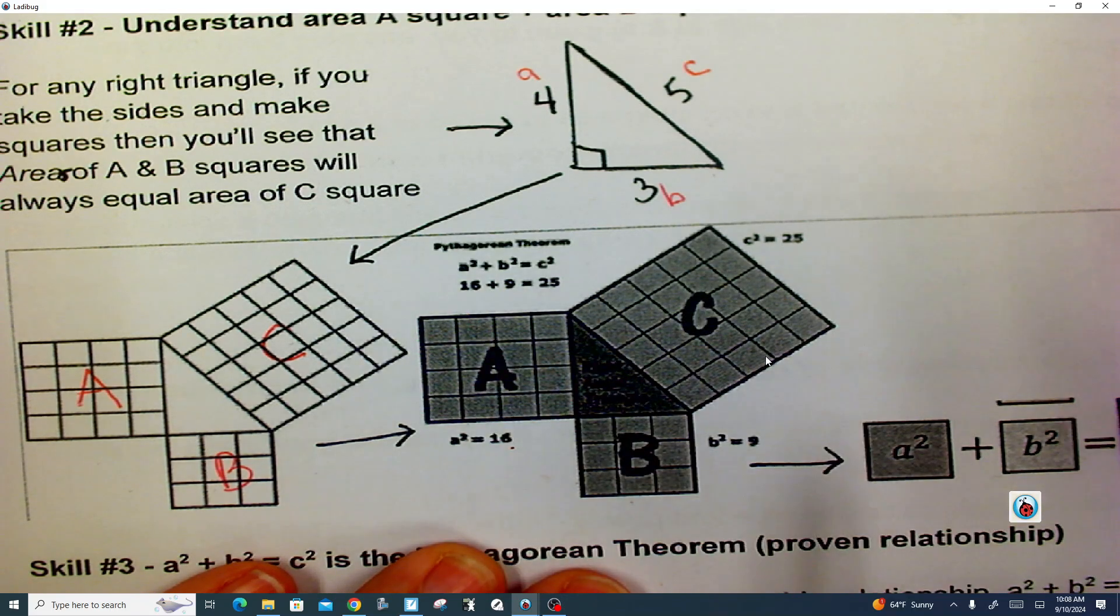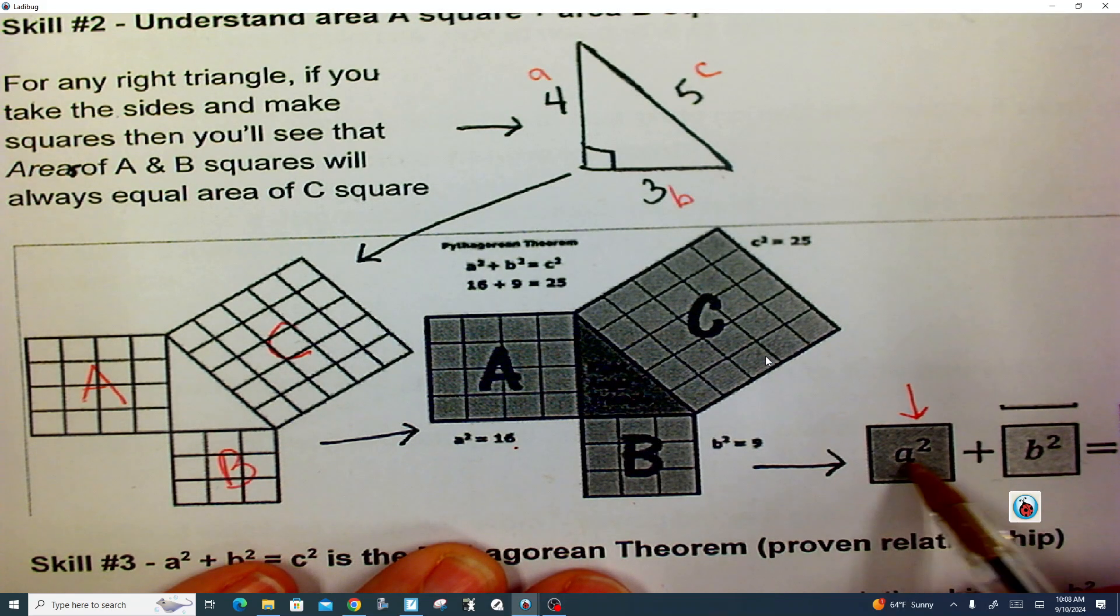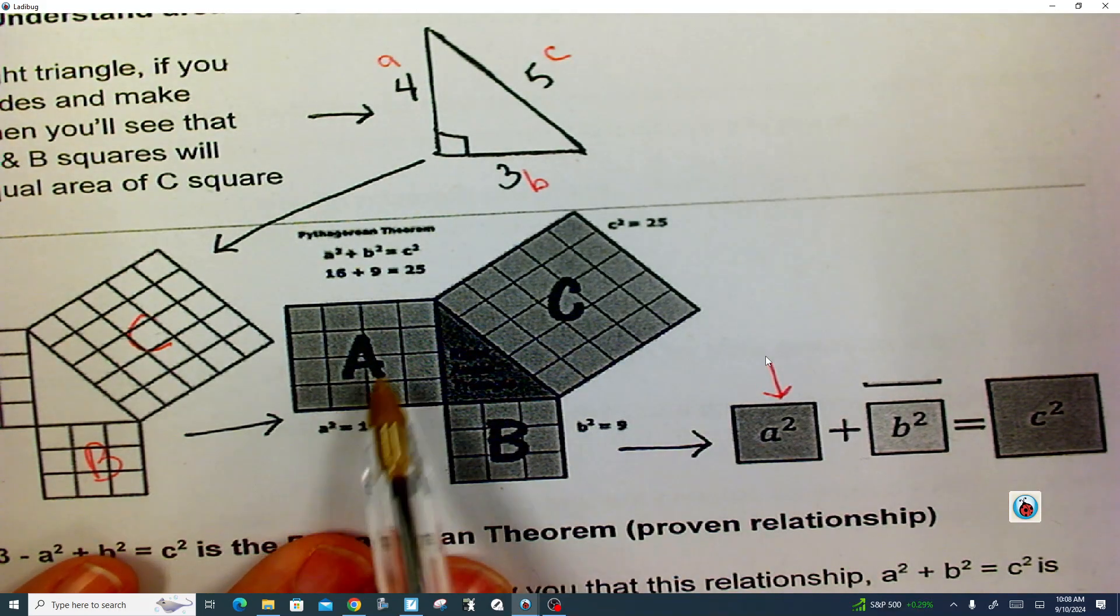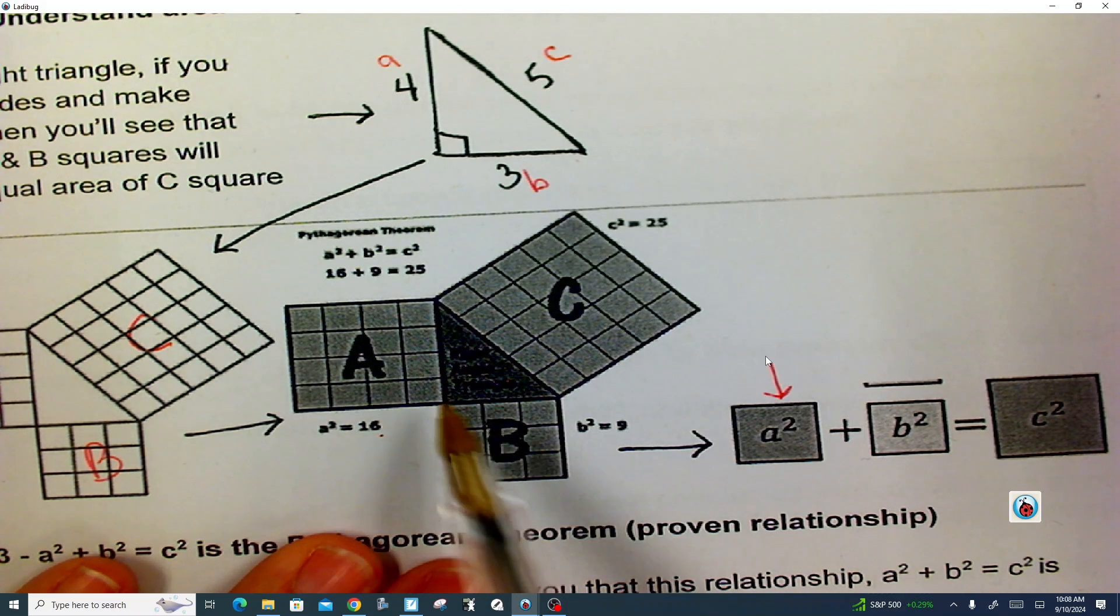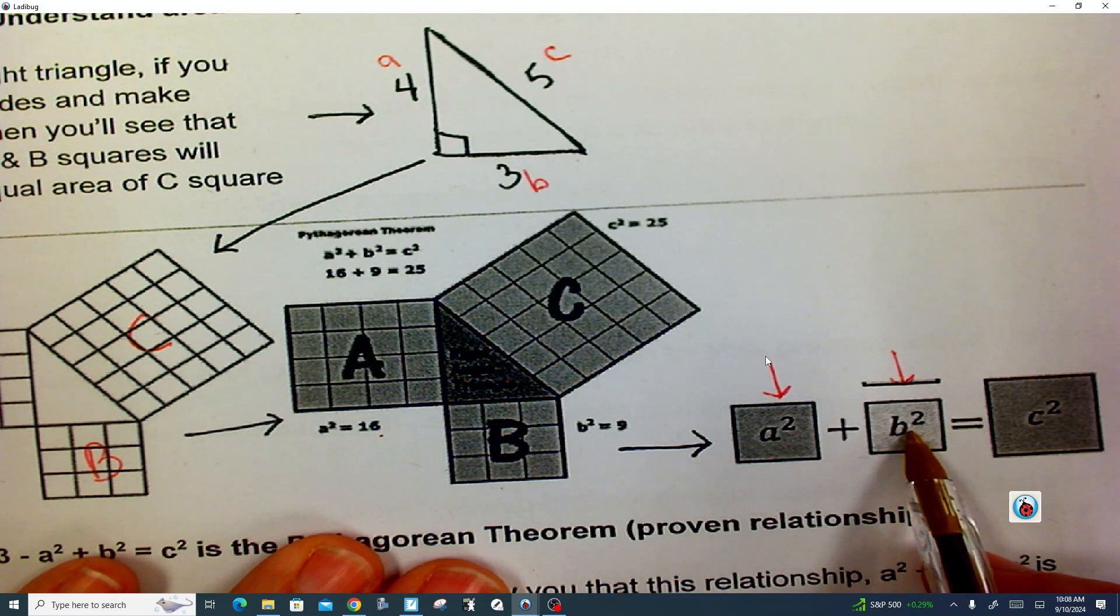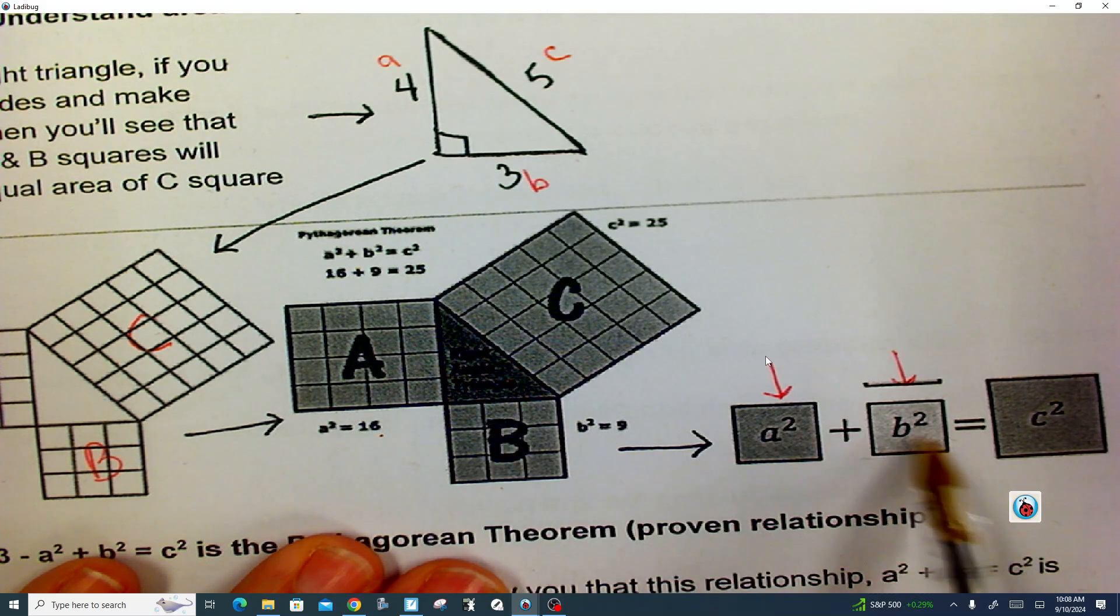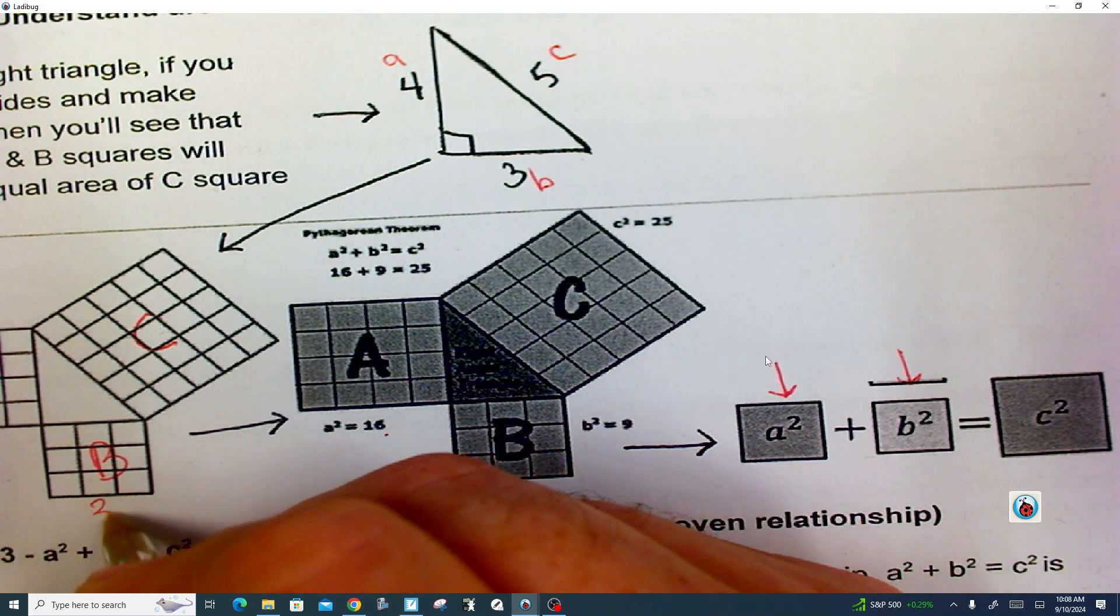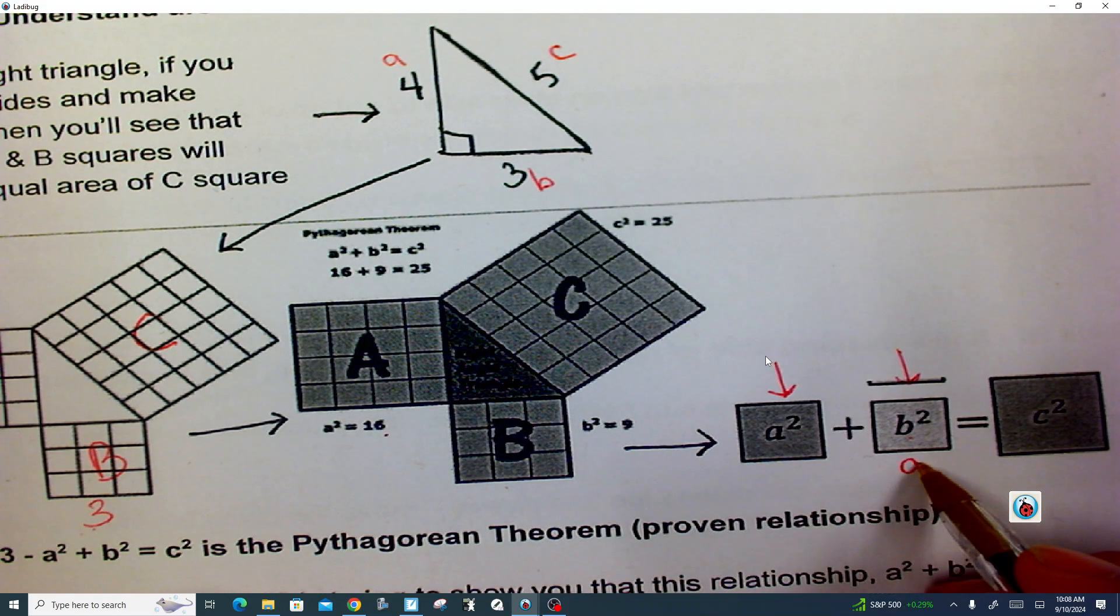And again, what I need you to understand is that when it says A to the second power, it's trying to show you that that is representing the area of the square that's beside that part of the right triangle. And so this B squared right here is saying, hey, can you go to the B side of the triangle? Here's B. Can you make a square? Well, this is the area of it. So B squared will be that. And so when we say this side is 3, what's 3 to the second power? 9.